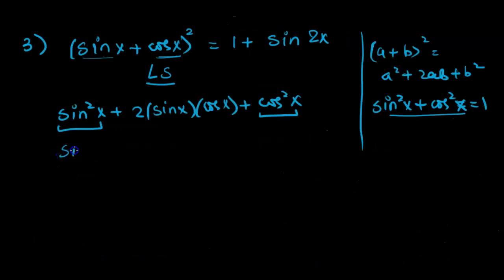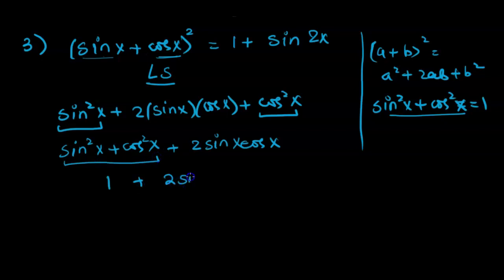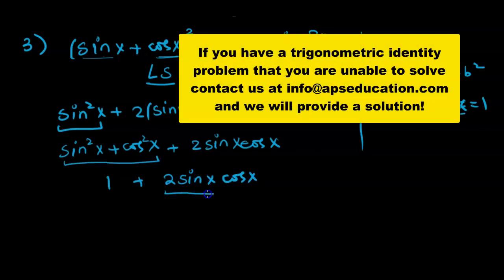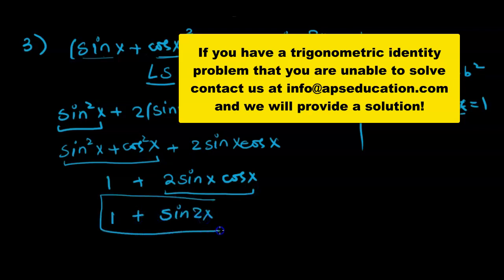We know sine squared x plus cos squared x equals 1, so collecting those terms gives 1 plus 2 sine x cos x. We recognize 2 sine x cos x as the double angle formula for sine 2x. So we get 1 plus sine 2x. We did not need to touch the right side at all — left side equals right side, hence proved.